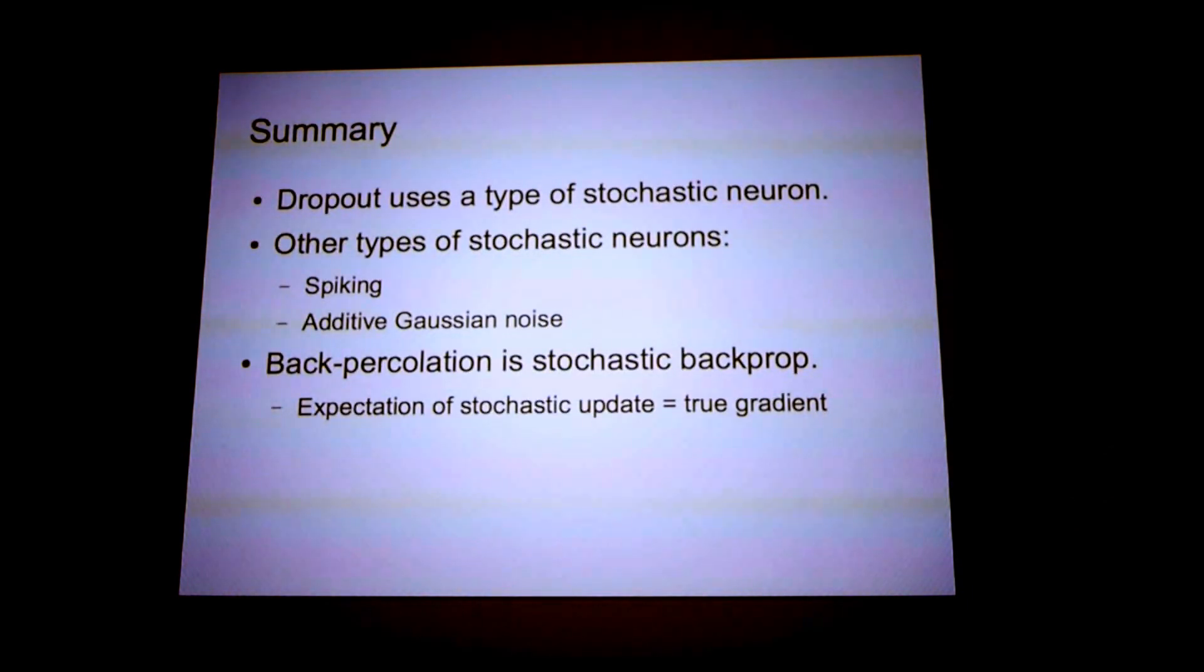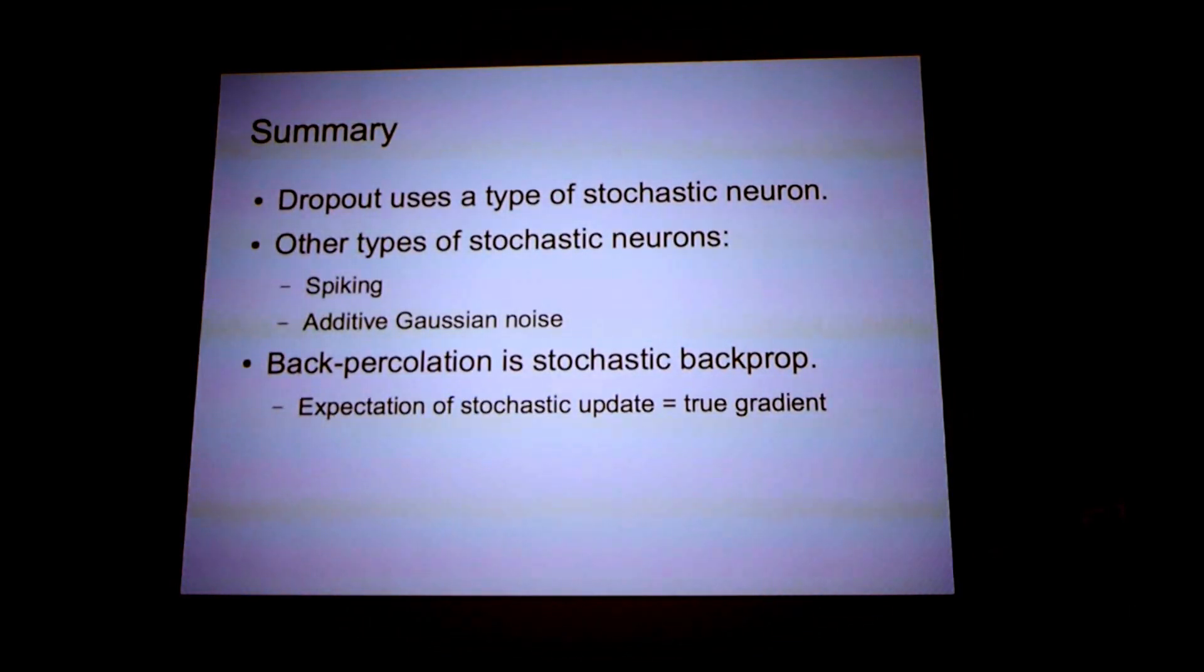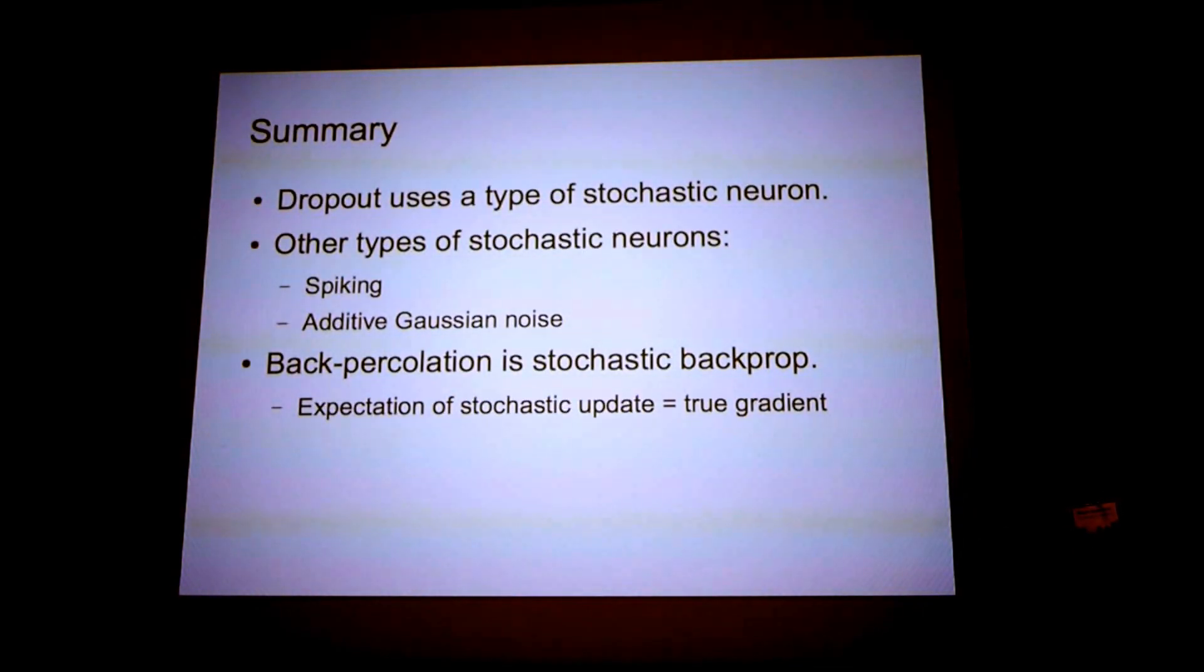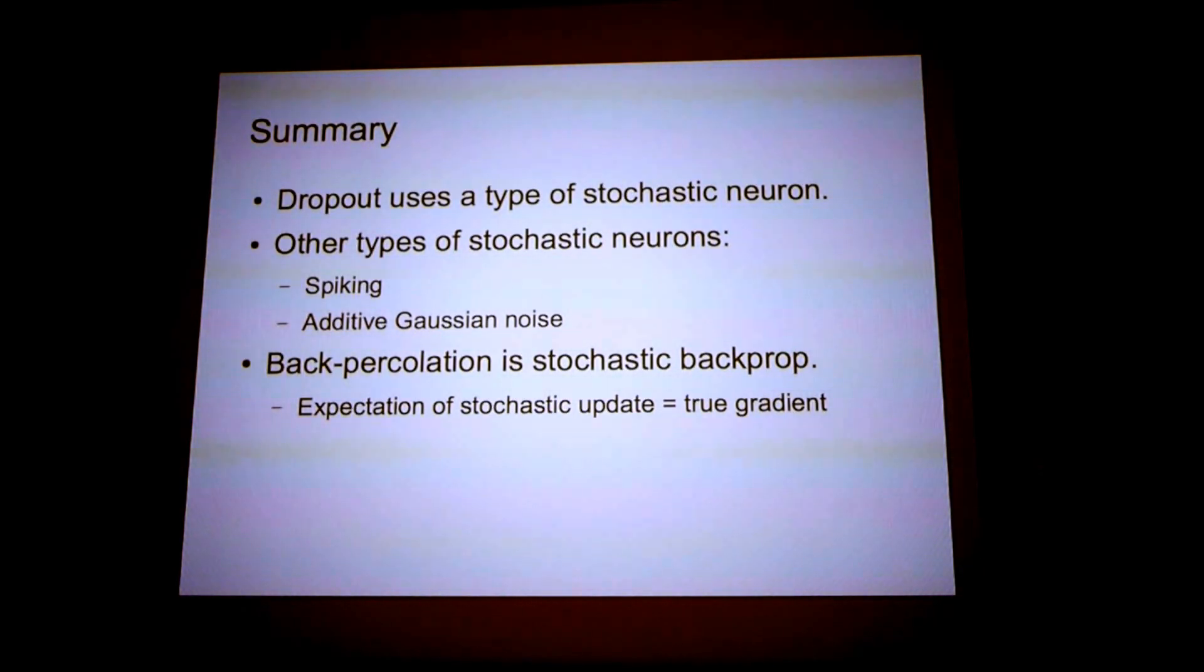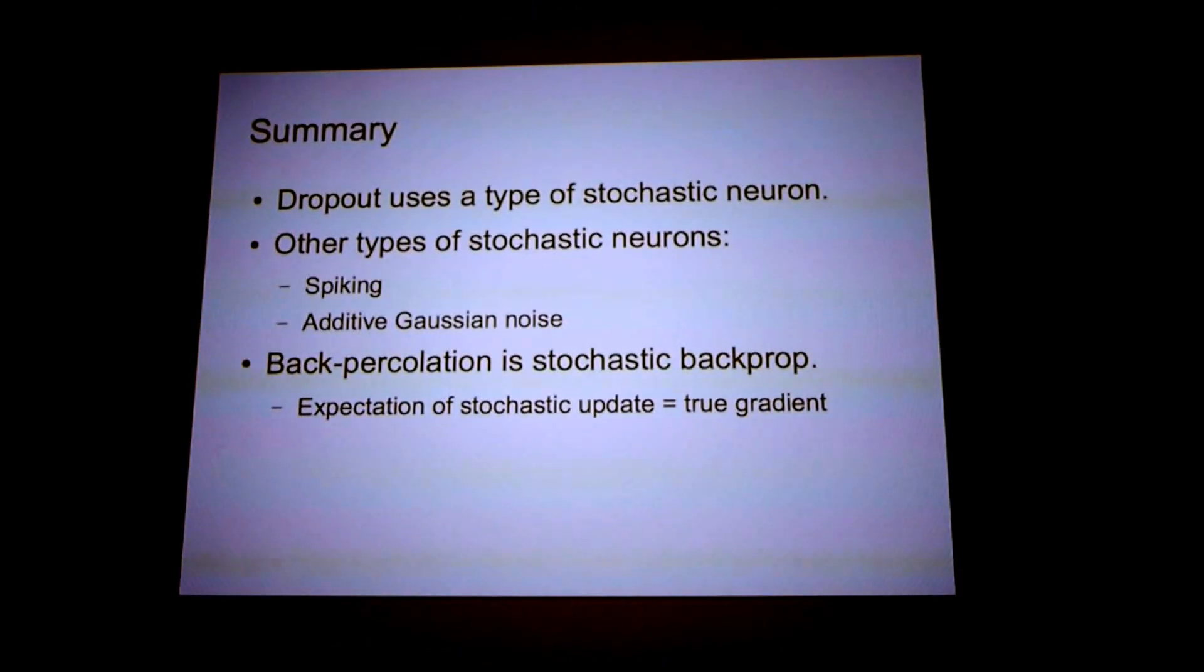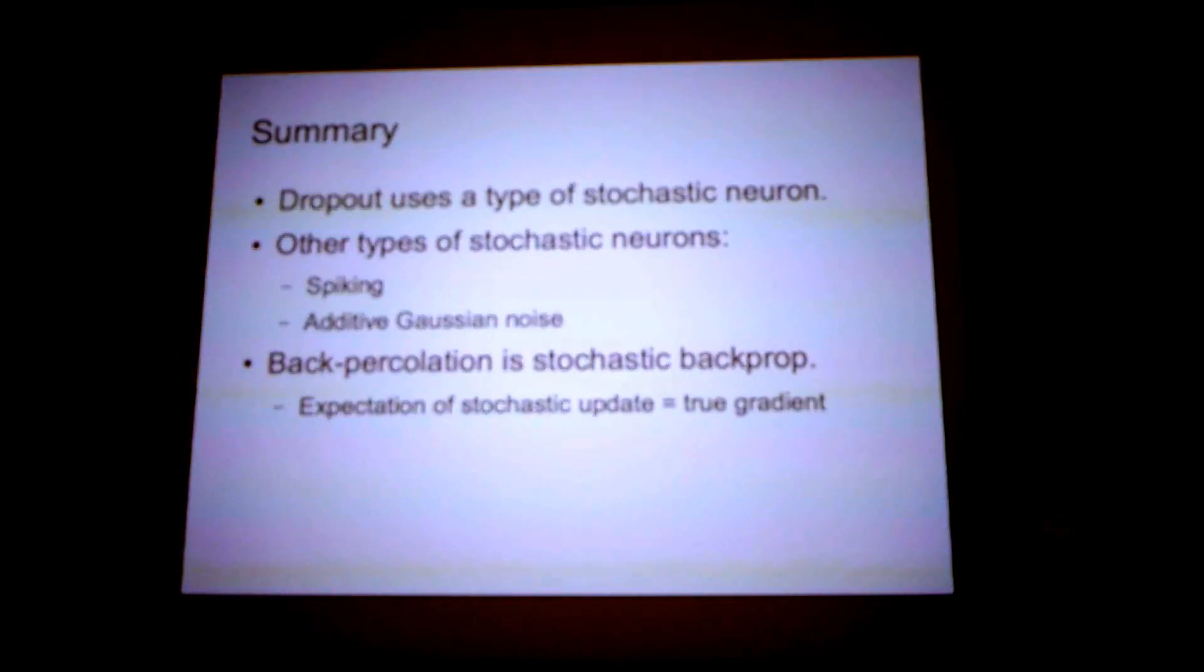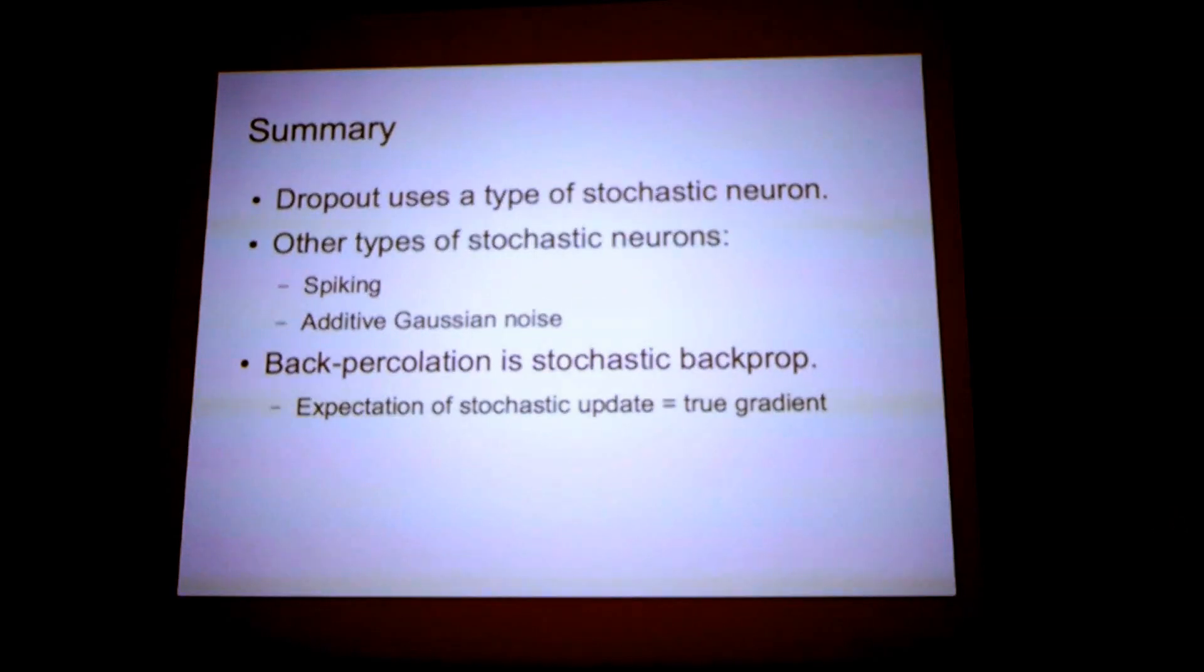So in summary, dropout is just using a certain type of stochastic neuron. And there are many other ways of adding noise to your neurons, such as this spiking algorithm and additive Gaussian noise. Some other people here at NIPS have been using Poisson distribution noise. And this other algorithm, backpercolation, is a type of dropout in the backpropagation stage of learning. And it's very interesting that the expectation of the stochastic update is exactly equivalent to the true gradient. Thank you very much.